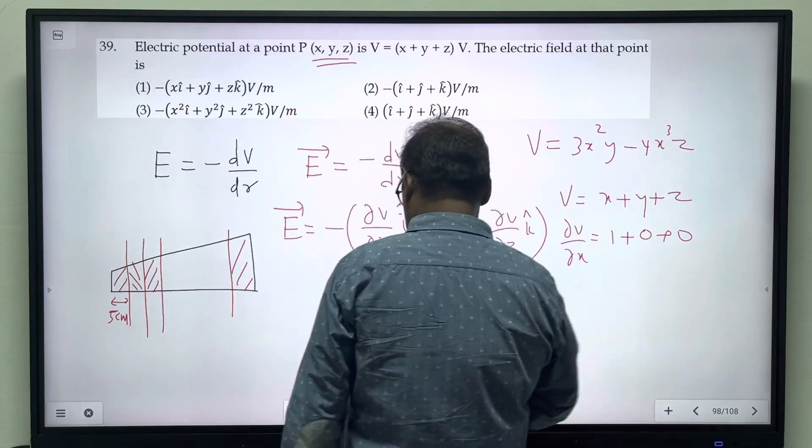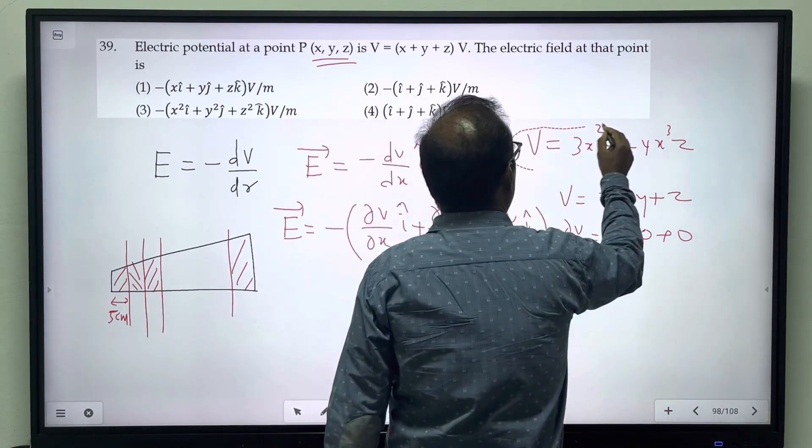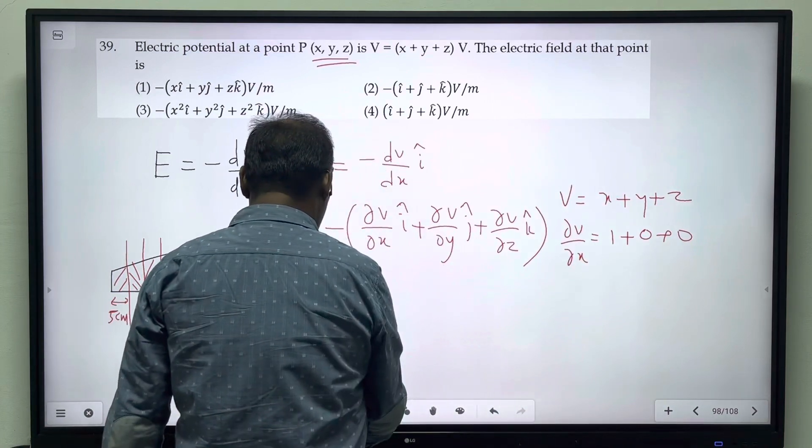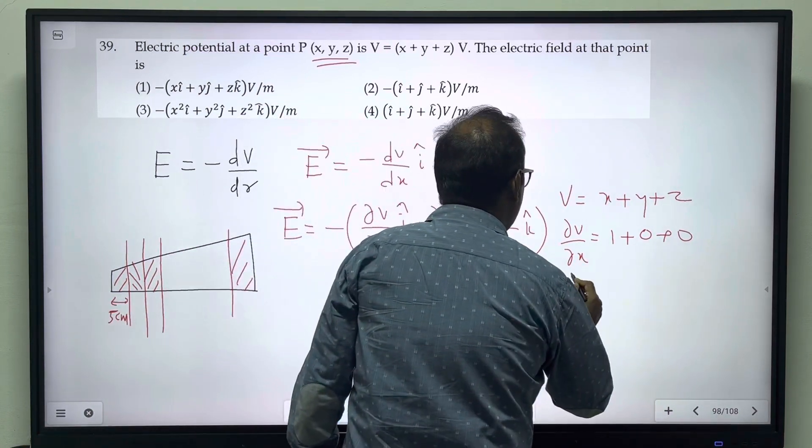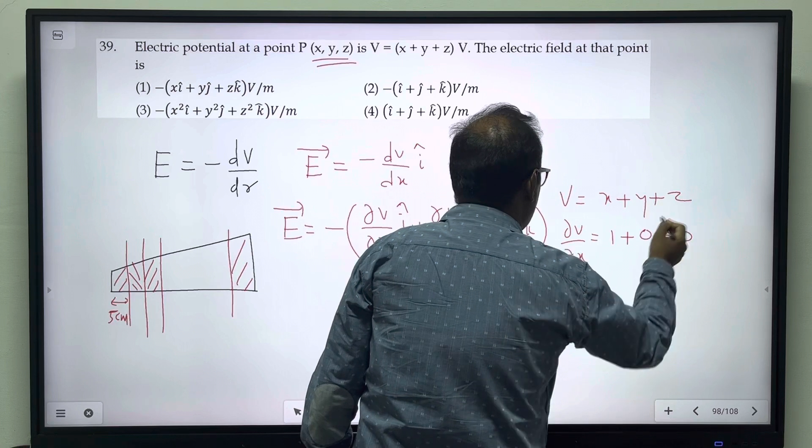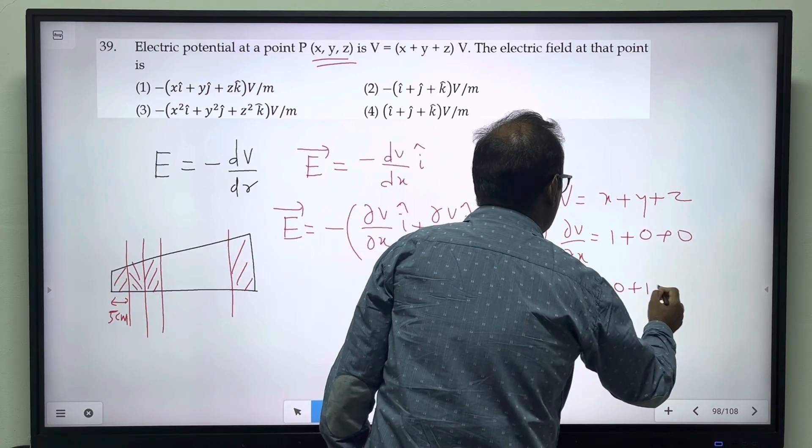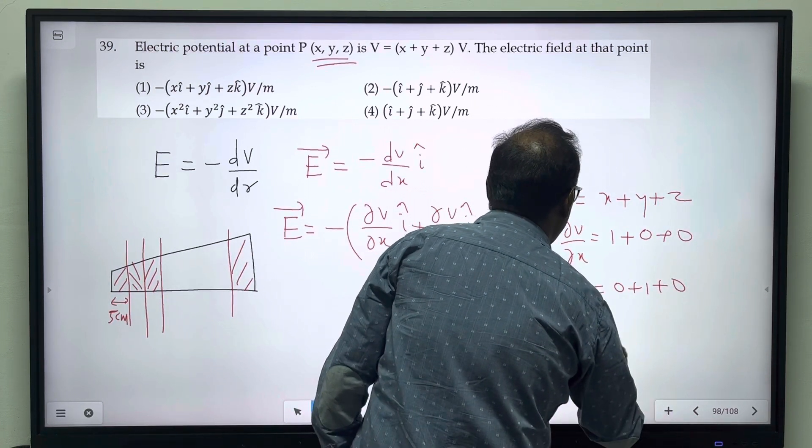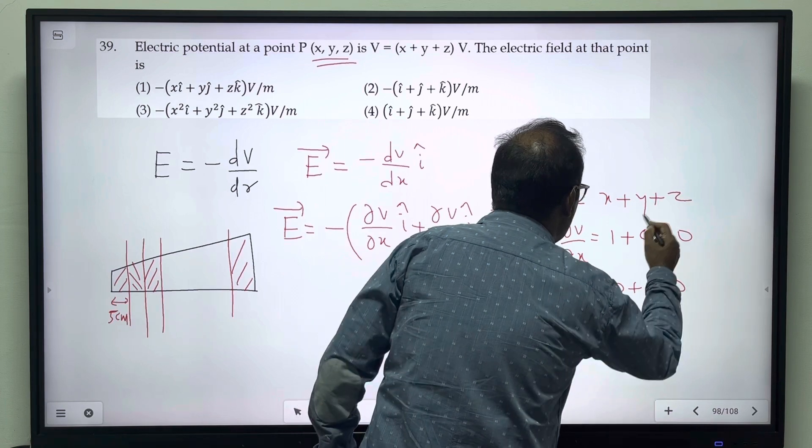∂V/∂y is 0 plus 1 plus 0, which equals 1. ∂V/∂z is 0 plus 0 plus 1, which also equals 1.